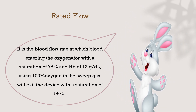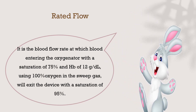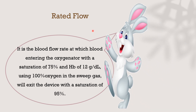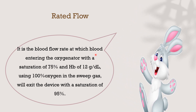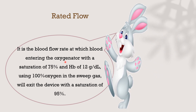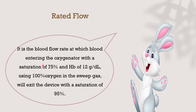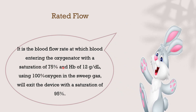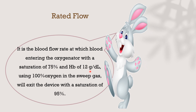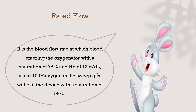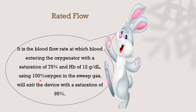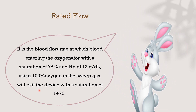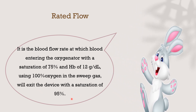Through troubleshooting hypoxia, we need to define some terms. The first term is rated flow. Rated flow is written by the manufacturer on each type of oxygenator and it is the blood flow rate at which blood enters the oxygenator with a saturation of 75%, a hemoglobin concentration of 12 g/dL, and we are giving 100% oxygen in the sweep gas. So the blood will exit the device with a saturation of 95%.